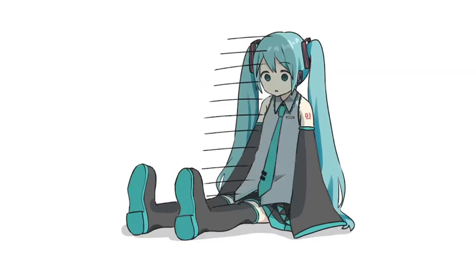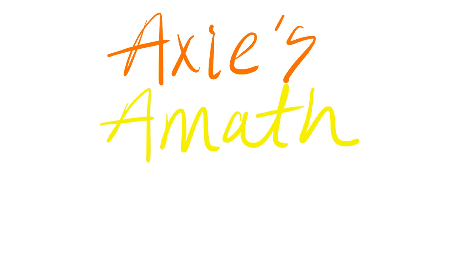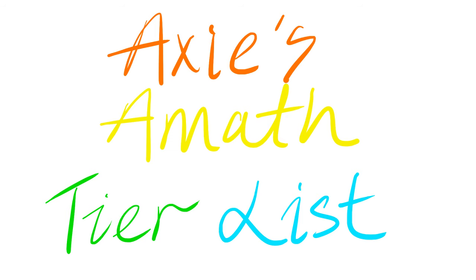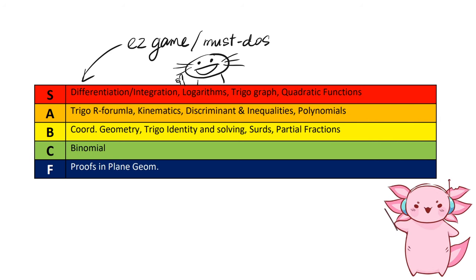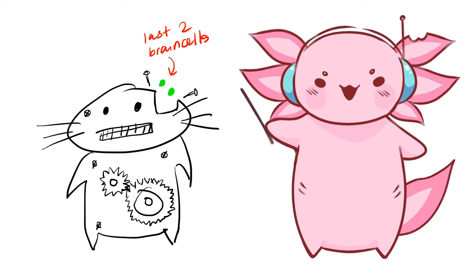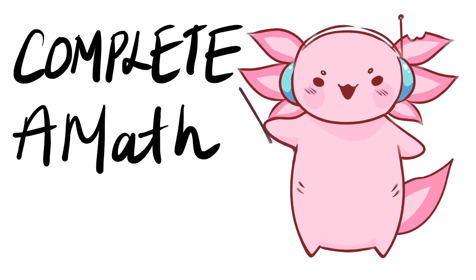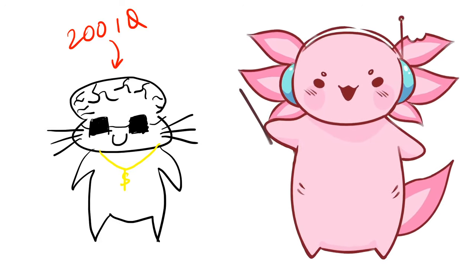But my exam is literally tomorrow. No worries, I got you, because here is Axis A-Math. Perfect for last-minute students like yourself. It's basically a tier list of all the topics, ranging from easy game must-do at the top, all the way down to why do you even exist. Hope your last two brain cells are ready for this complete A-Math guide, solving 200 IQ math questions and dank memes. Are you ready? Let's go!